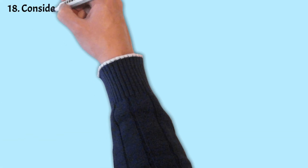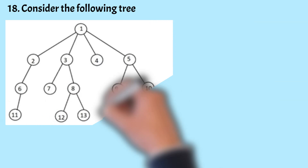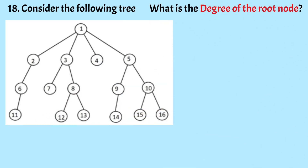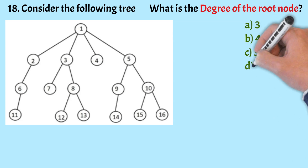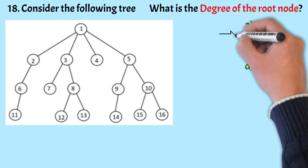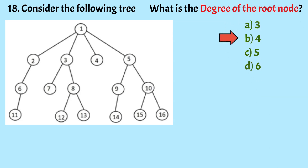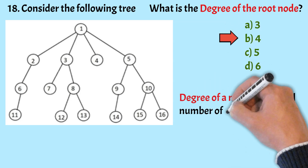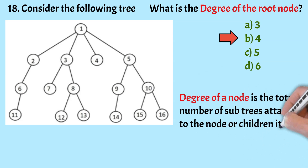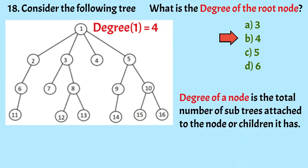The next question: considering the following tree, what is the degree of the root node? The options are given. The correct option is Option B, that is 4. The degree of a node is the total number of sub-trees attached to the node, or the number of children it has.